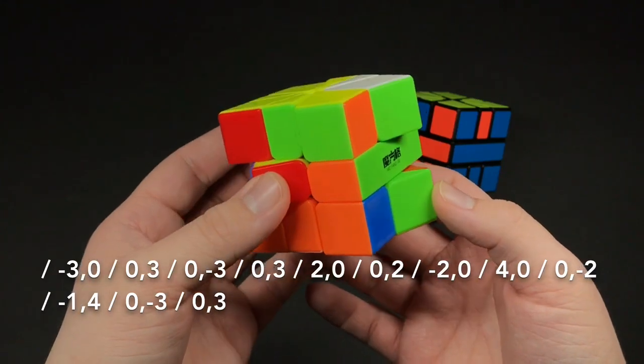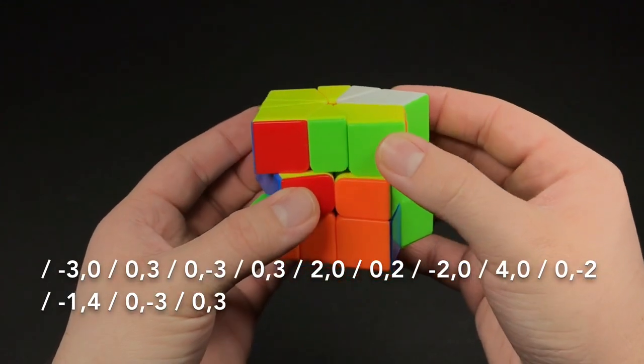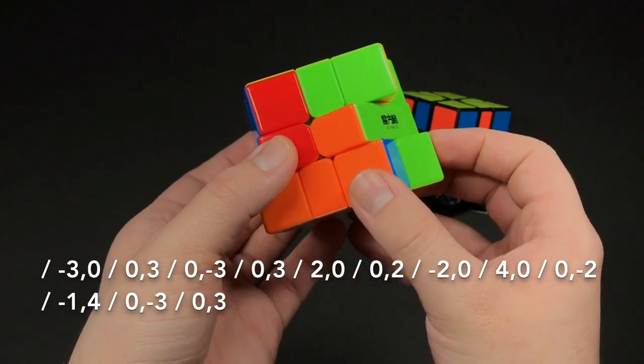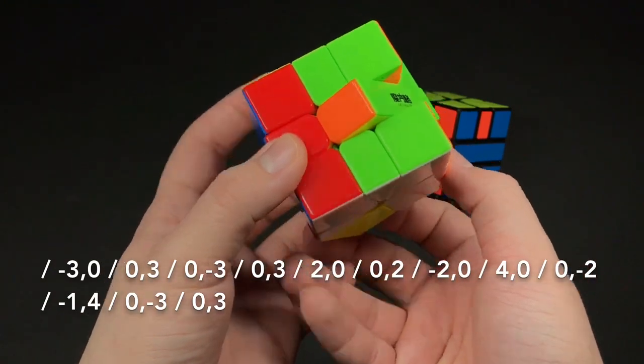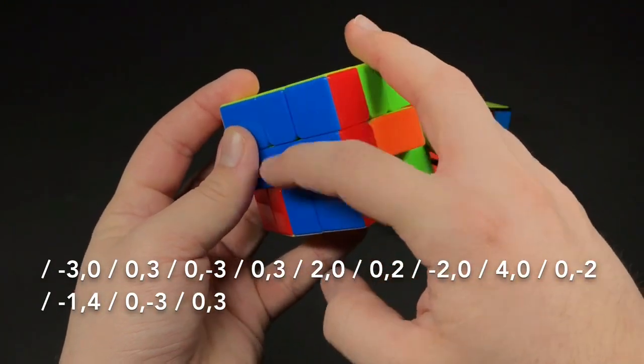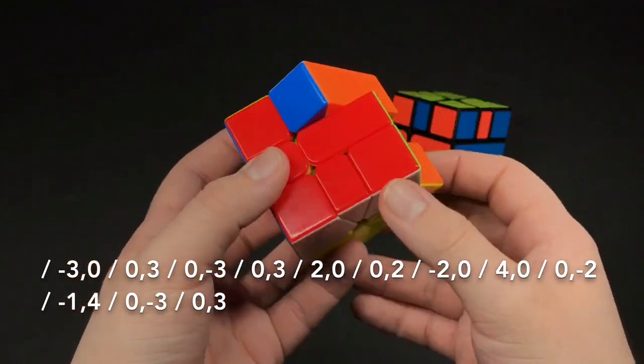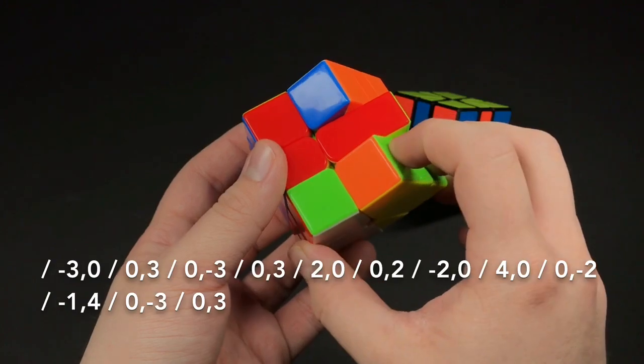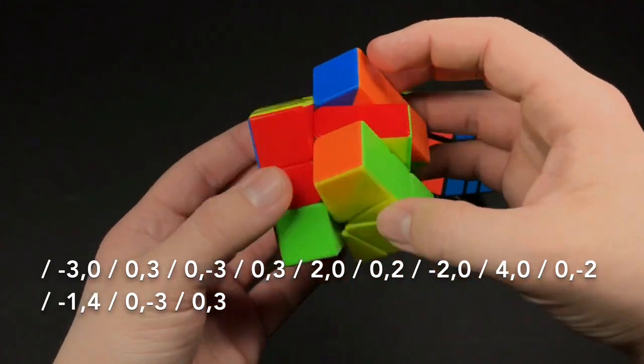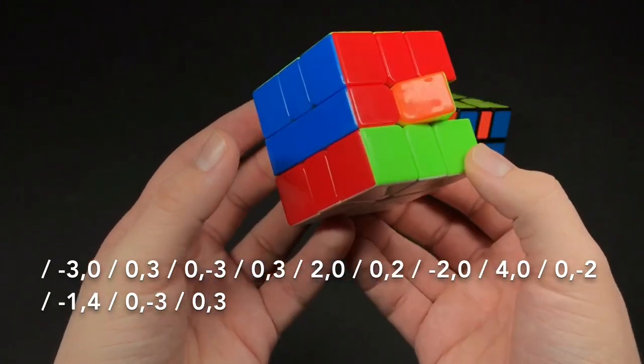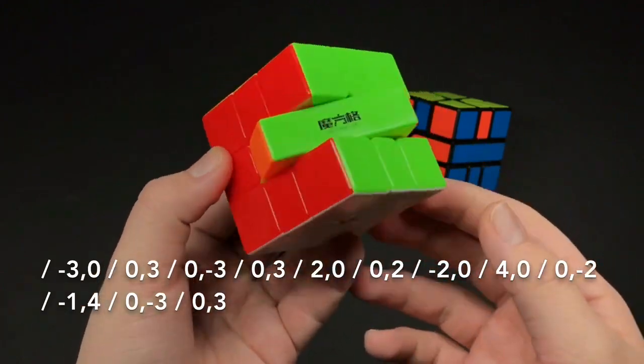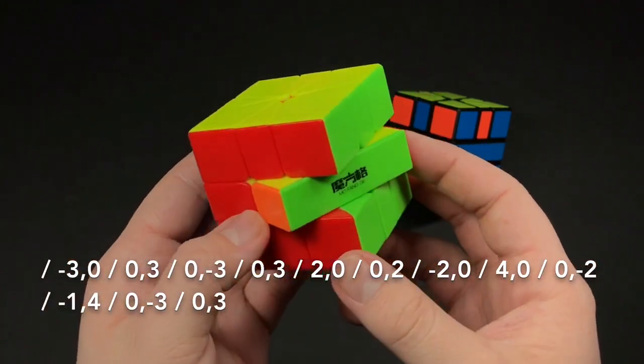And then from here, you do negative one on top and then four on the bottom to line up this. And this looks a lot solved. Slash, negative three, slash. And then you just got to realign that layer. And that's how you do it.